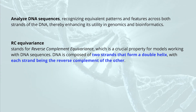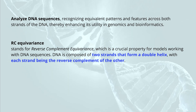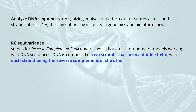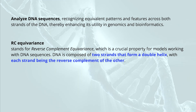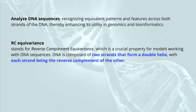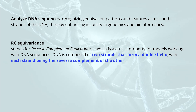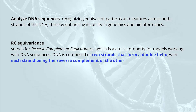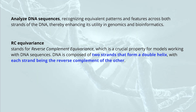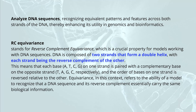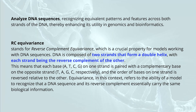Now just one term before we move on. Remember, DNA sequences have two strands in our famous double helix structure used in genomics and bioinformatics. The term is simply RC equivariance, which stands for reverse complement equivariance. This is a crucial property because DNA is composed of two strands forming this double helix, each strand being the reverse complement of the other. Each base on one strand is paired with the complementary base on the opposite strand.